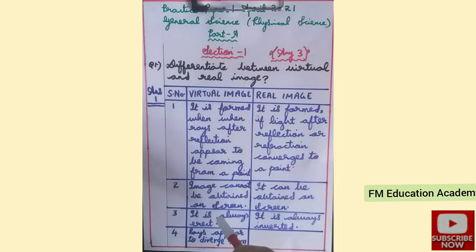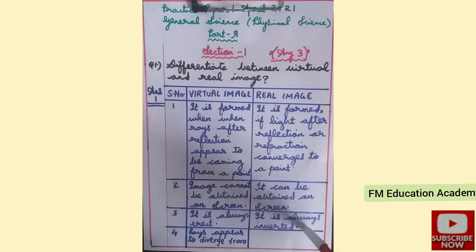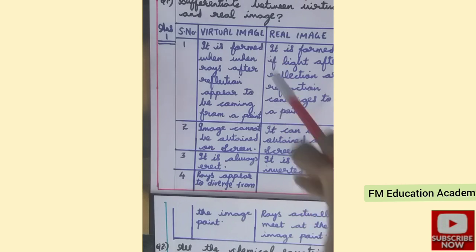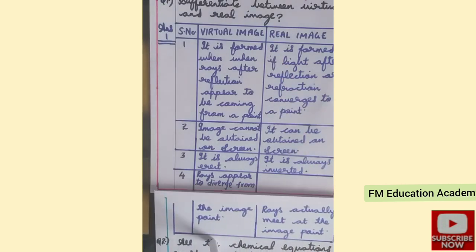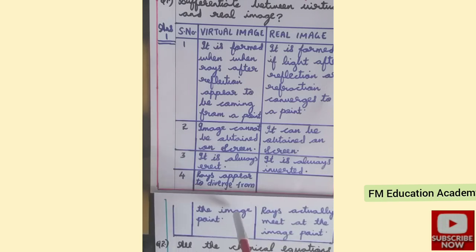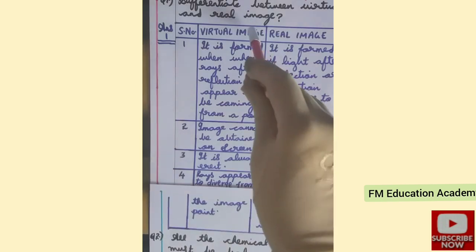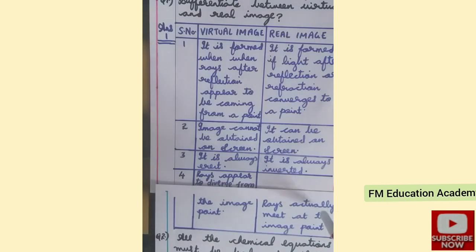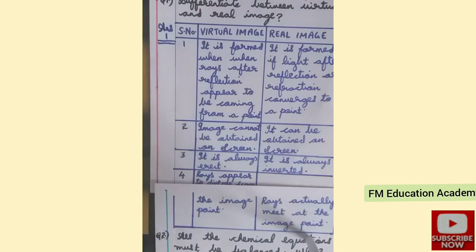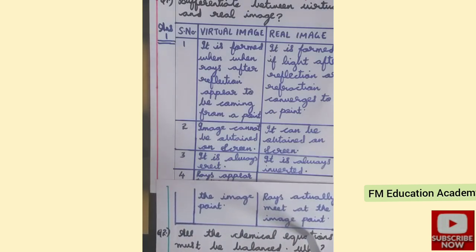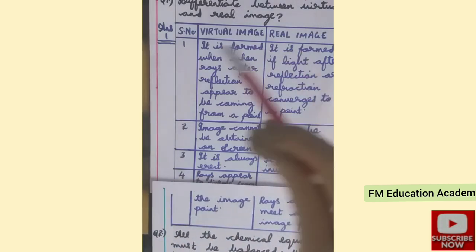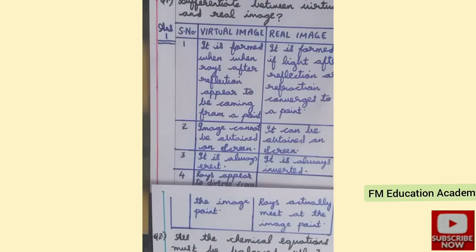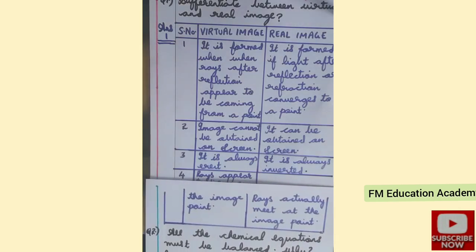A virtual image is always erect; a real image is always inverted. In a virtual image, rays appear to diverge from the image point — they appear to move away. In a real image, rays actually meet at the image point. So remember: in a real image rays will meet, in a virtual image they will diverge. These are the four differences for distinguishing between virtual and real image.